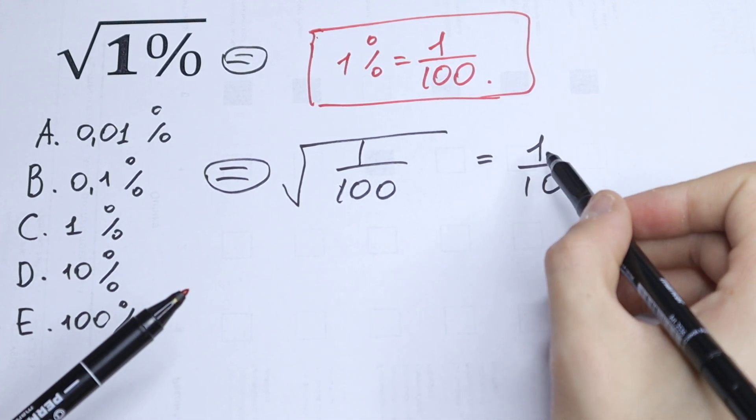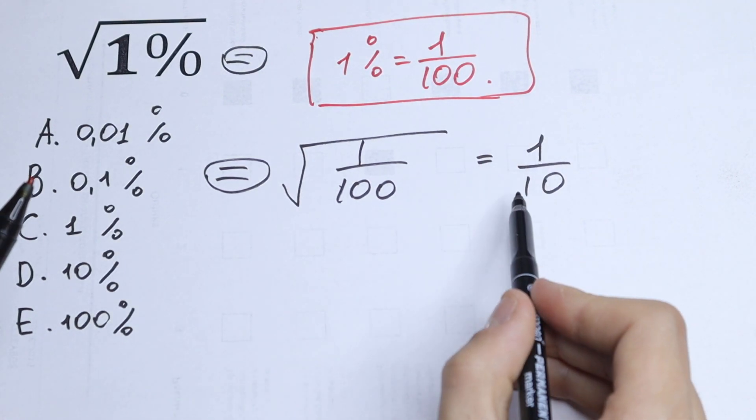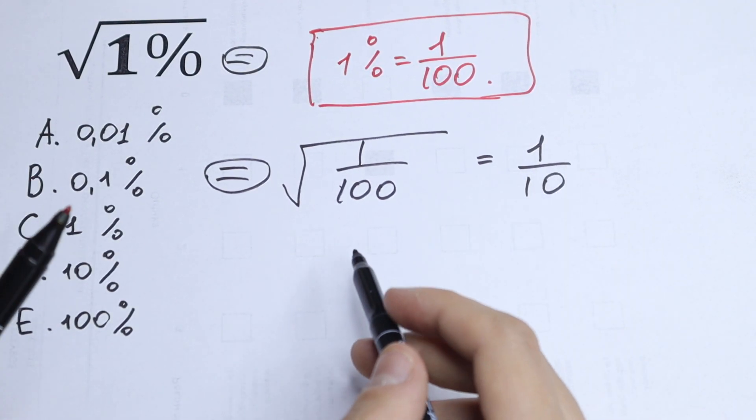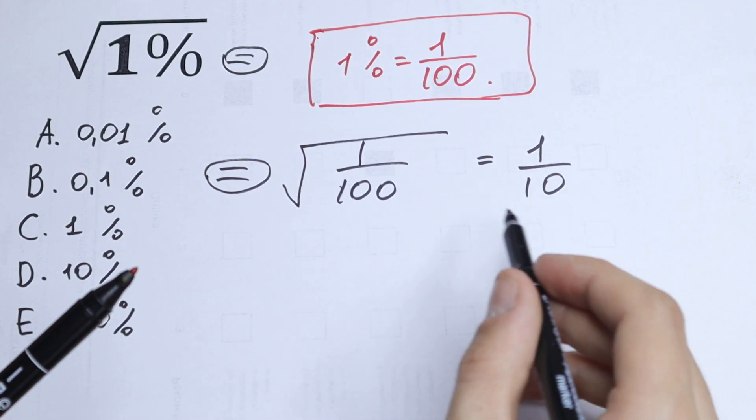So this is of course our answer, but we have options in percent. How can we get this in percent? We need to convert this value to percent. How can we do this?